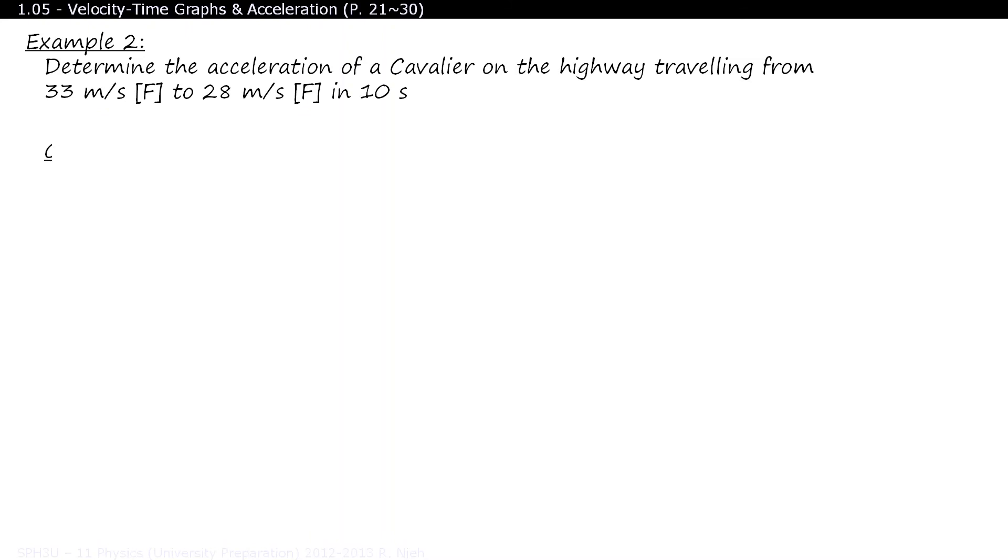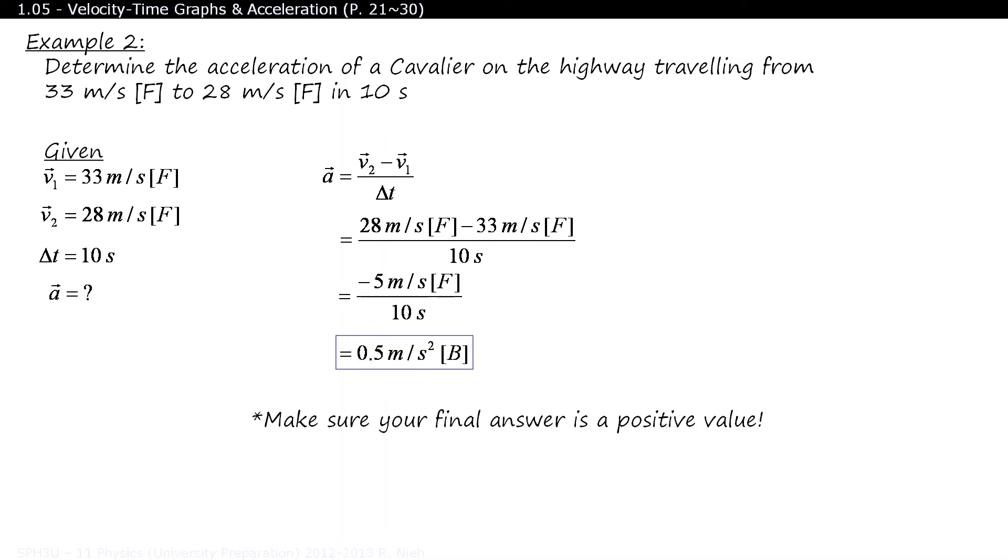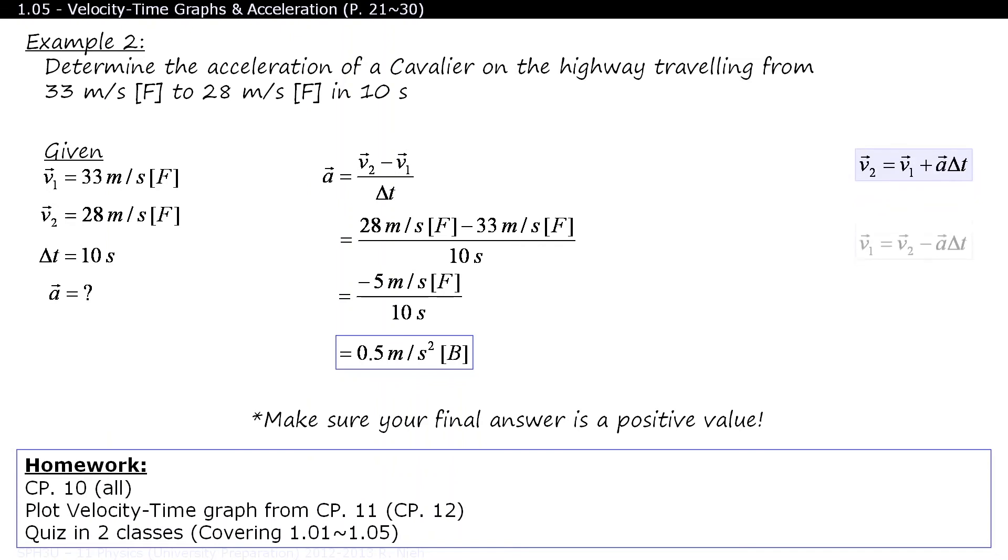Ready for the answers? Remember to always state your givens. 33 is the initial velocity, and 28 is the final velocity. Some textbooks use 1 and 2 for initial and final. You can still use VI and VF if you're more comfortable with that. Next, show the formula, sub the values in, and make sure that your final answer is written as a positive value if it's a vector.